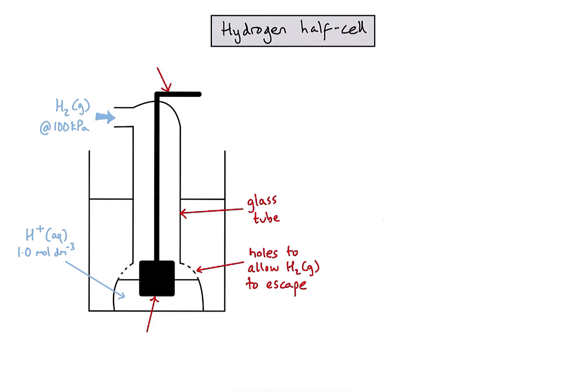The other bit we normally see in half cells, we've got an electrically conductive wire. And slightly unusually down at the bottom, we have a platinum electrode that we will discuss in a moment.